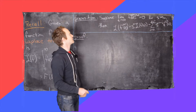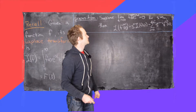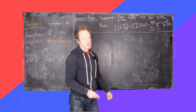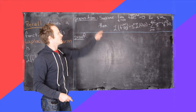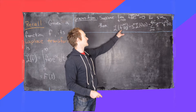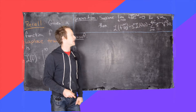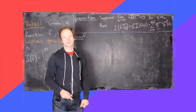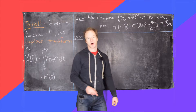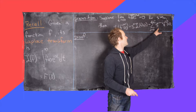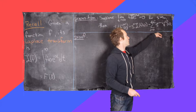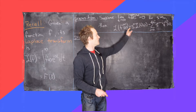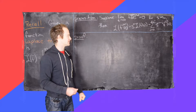Under the mild assumption that the limit as t goes to infinity of the nth derivative of f times e to the minus st equals 0 for s bigger than s0, we have that the Laplace transform of the nth derivative of f is equal to s to the nth power times the Laplace transform of the original function, minus this sum. Notice in this sum the powers of s are going down as the derivatives are going up. After we prove this, we'll look at a couple of examples.